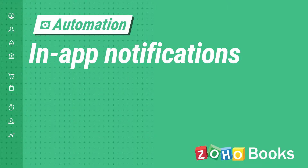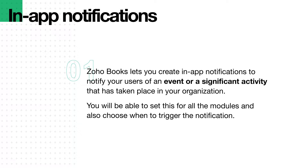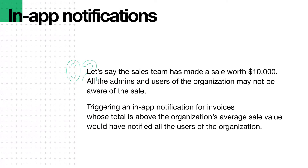Zoho Books lets you create in-app notifications to notify your users of an event or a significant activity that has taken place in your organization. You will be able to set this for all the modules and also choose when to trigger the notification. For example, if the sales team made a sale worth $10,000, all the admins and users may not be aware of it. Triggering an in-app notification for invoices whose total is above the organization's average sale value would notify all users.